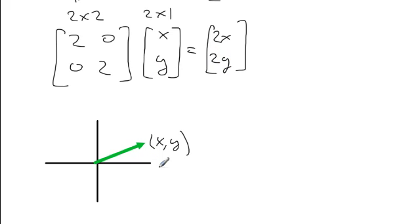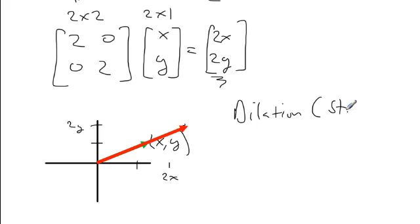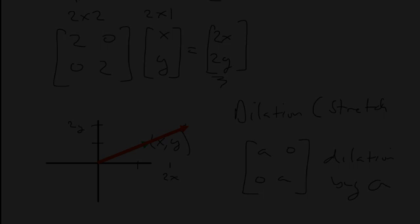So if I take 2x and 2y, my new vector is doubled. Convince yourself this is exactly double the original vector — I doubled the x-coordinate and doubled the y-coordinate. The output is two times the original. So this linear transformation [2, 0, 0, 2] turns out to be what's called a dilation, or a stretch. In general, any matrix of the form [a, 0, 0, a] — any diagonal matrix where all the diagonals are the same value — is a dilation by a.